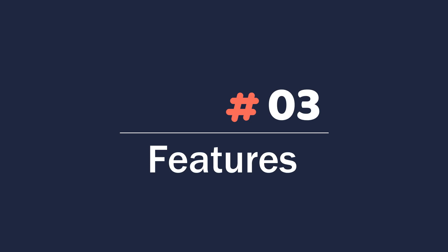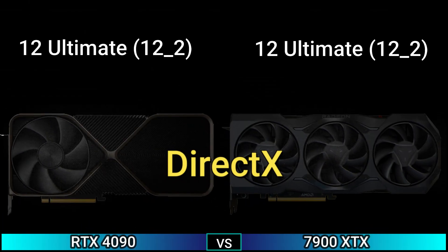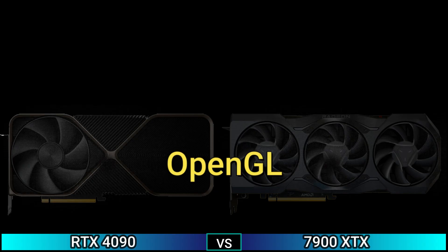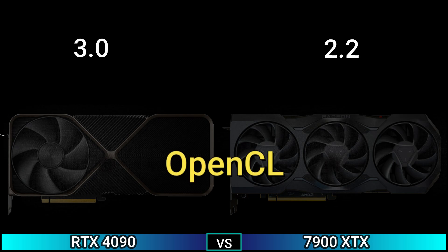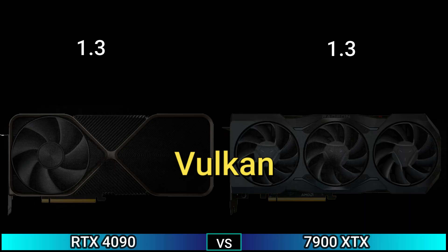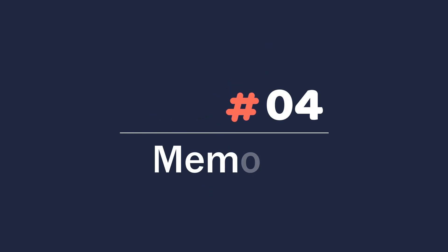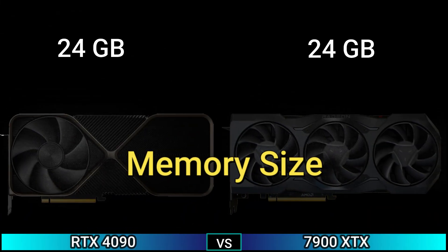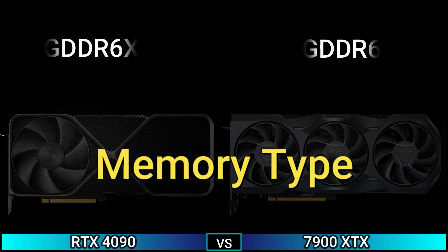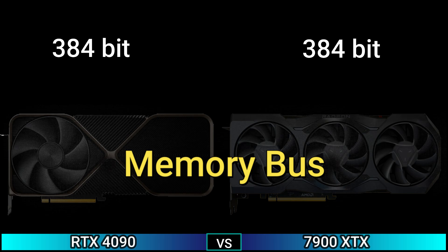Next, features: DirectX 12 Ultimate 12.2, OpenGL 4.6, OpenCL 3.0 and 2.2, Vulkan 1.3, Shader Model 6.8. Memory size: 24GB, memory type: GDDR6X and GDDR6, memory bus: 384-bit.